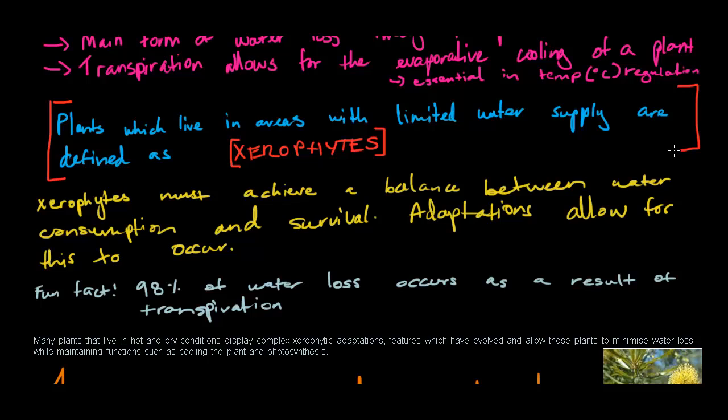So here's a little fun fact. 98% of water loss occurs as a result of transpiration. So now we know that transpiration is the main cause of water loss, and is pretty much what plants are trying to find a balance in between in order to survive and to actually cool themselves down for temperature regulation.